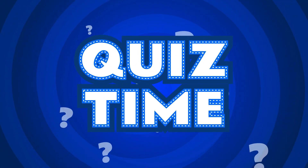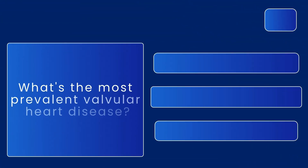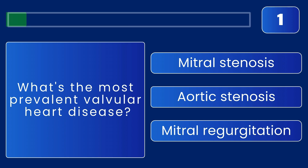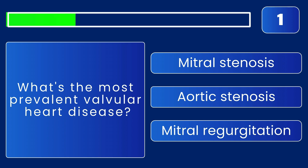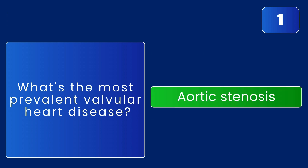What's the most prevalent valvular heart disease? The correct answer is aortic stenosis — it's the most common.